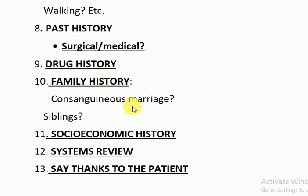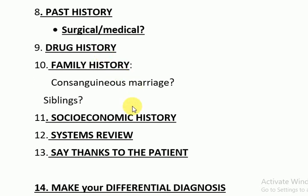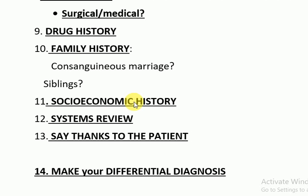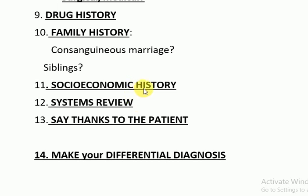Then the family history — whether the parents' marriage was a consanguineous marriage or not, whether the child is a product of that marriage, and you would ask about the siblings. You would ask all these questions about family history. The socioeconomic history is also important — diseases like TB are associated with socioeconomic status.